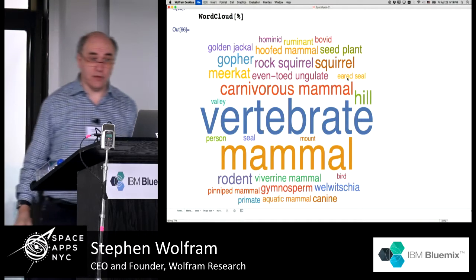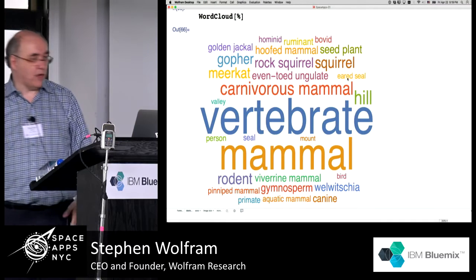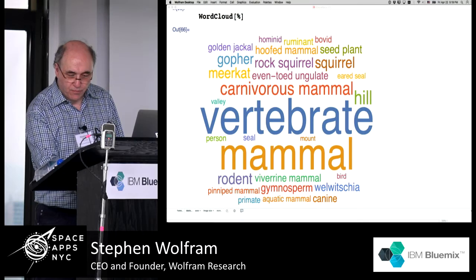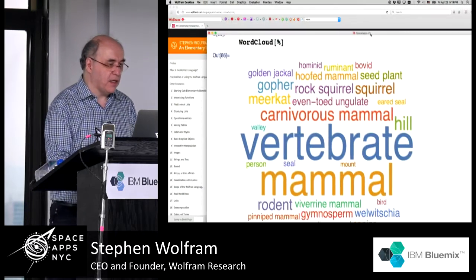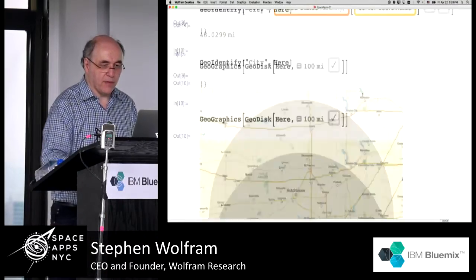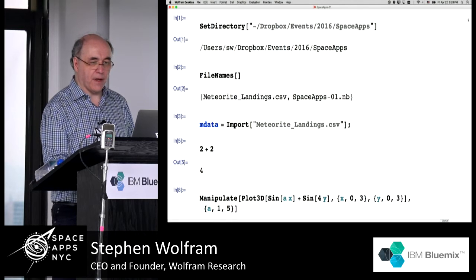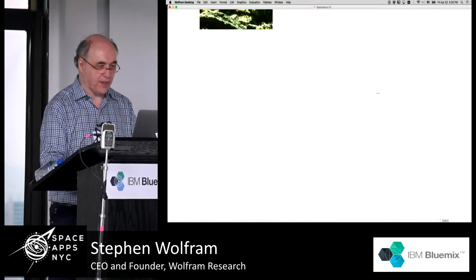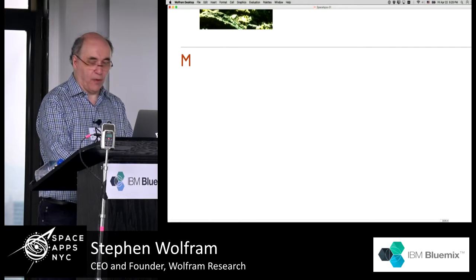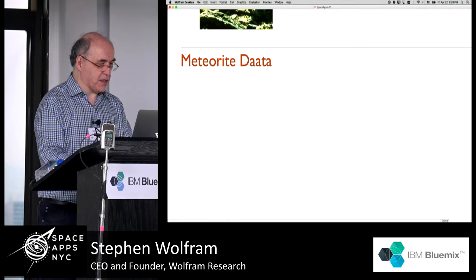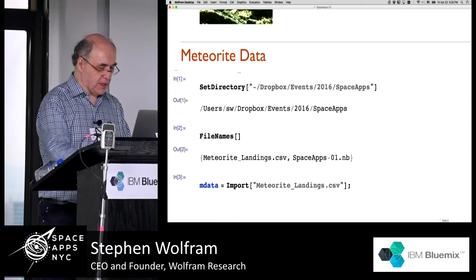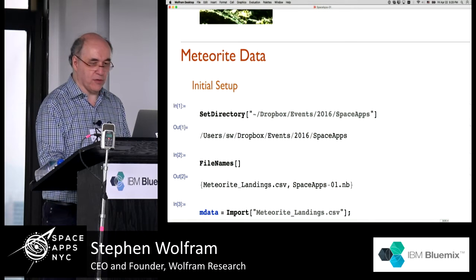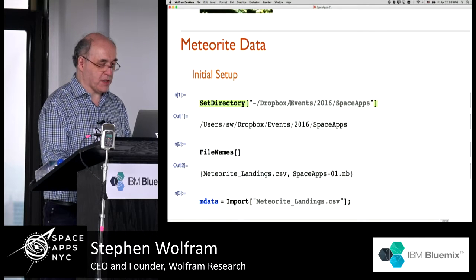Let's do something with some NASA data. I had just started looking at the catalog of NASA data. Let me try to pull up what I had. I've got meteorite data here — I've just been putting something in Dropbox here. I've got this very nice concept of notebooks, and this document is a notebook. Let me actually make a section heading. This was data about meteorites — initial setup. This is the way I actually like to work, putting in all these notebook elements.